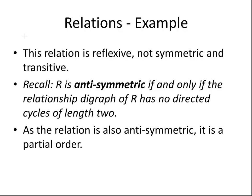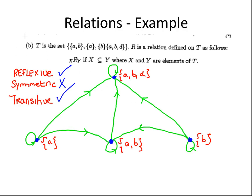Now, recall, a relationship R is anti-symmetric if and only if the relationship digraph of R has no directed cycles of length 2. That's a sort of quick way we can just check. So, in this case, there are no directed cycles of length 2.